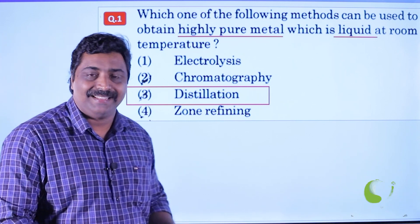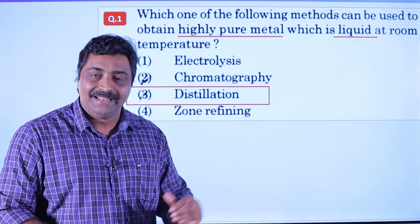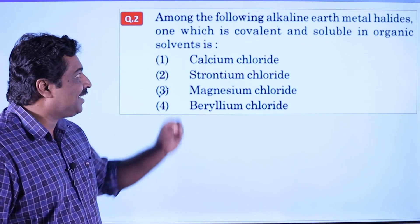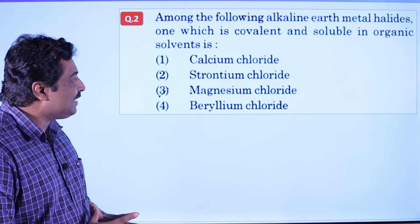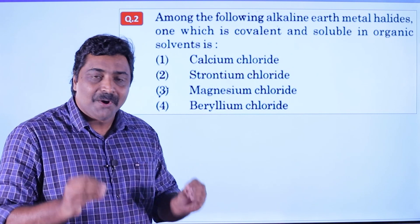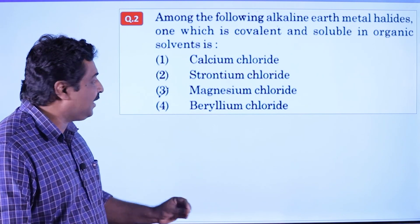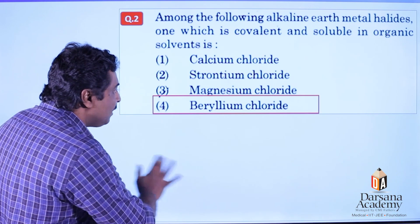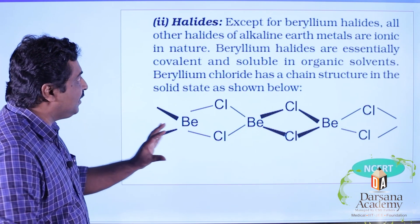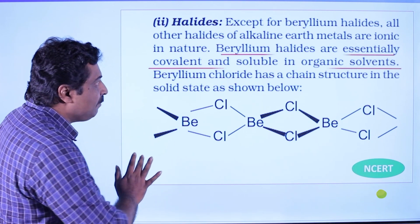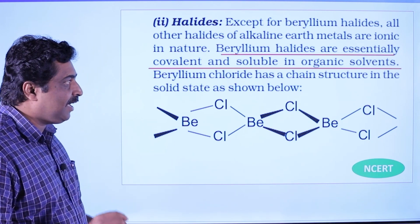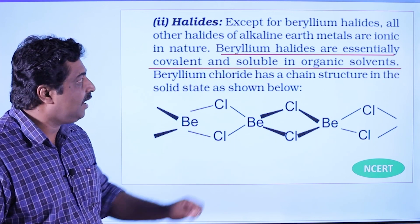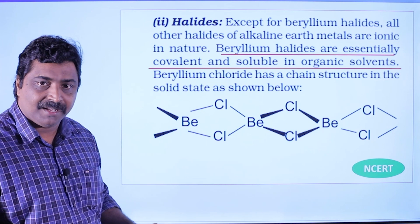The next question is about alkaline earth metals. Which one is covalent and soluble in organic solvents? According to the NCERT book, beryllium chloride is essentially covalent and soluble in organic solvents.